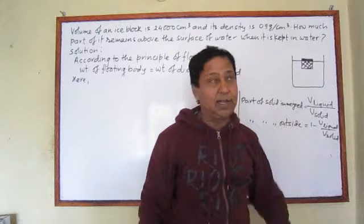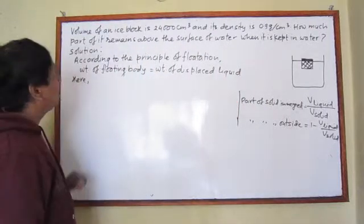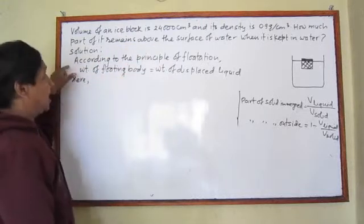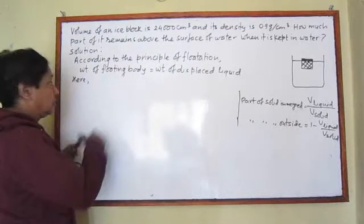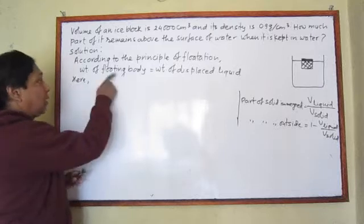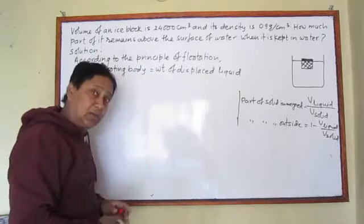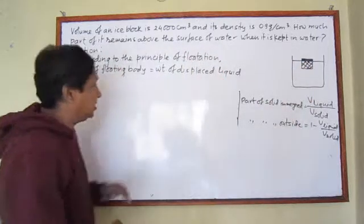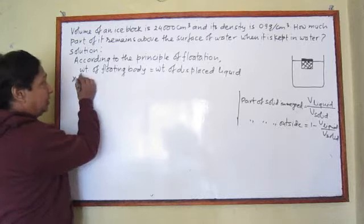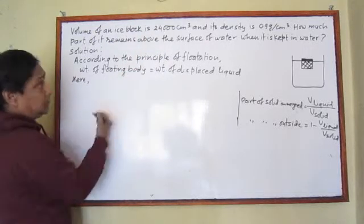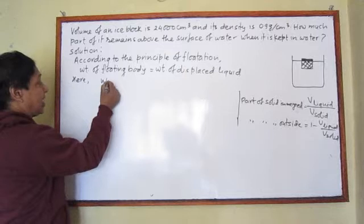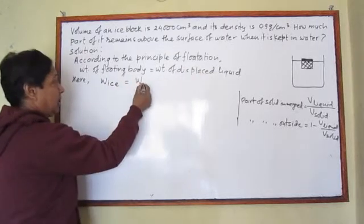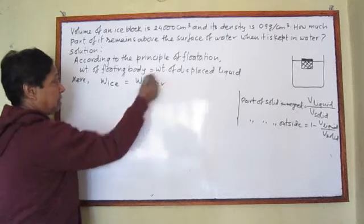Now let's solve the numerical problem. This can be solved using the Principle of Flotation. The Principle of Flotation says that the weight of a floating body is equal to the weight of the displaced liquid. So if a body is floating, its weight must equal the weight of the displaced liquid. In this case, the floating body is ice, so weight of ice is equal to weight of displaced water.